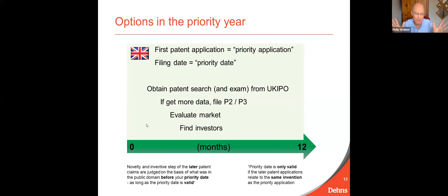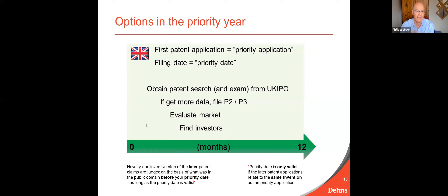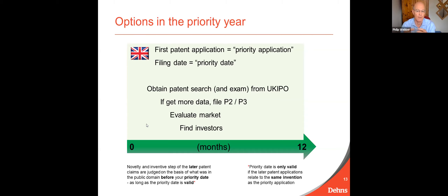If the patent office examiner comes back and says all features of this invention lack novelty or inventive step and there's no chance of getting patent applications granted in other countries, then you can just give up there. Hopefully that's not what they say. Within this year it also gives you a chance to produce more data on your invention and add that data into your priority application. And if you're not very familiar with your market yet, it gives you a chance to do a market survey to see whether there are people likely to pay for your invention. If you are a lone inventor or small company, it gives you a chance to approach investors.